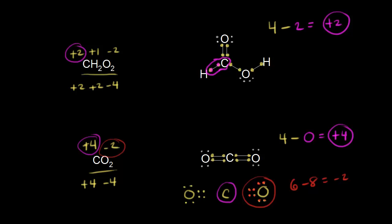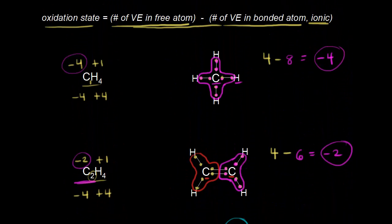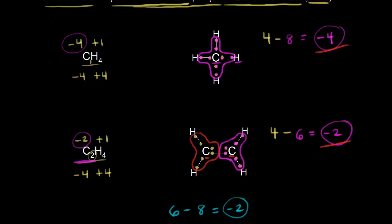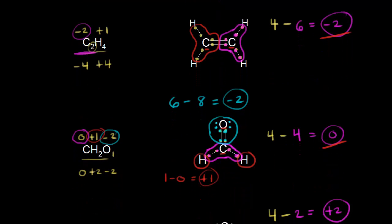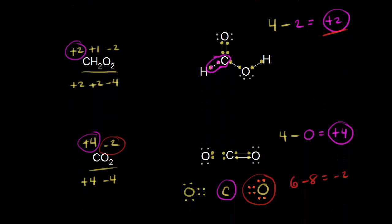Looking back at all the oxidation states we've covered for carbon: we went from minus four in methane, to minus two in ethene, to zero in formaldehyde, to plus two in formic acid, and finally plus four in carbon dioxide. Carbon can have a range of oxidation states from minus four to plus four when it has four bonds — and values in between, like plus three, are also possible.